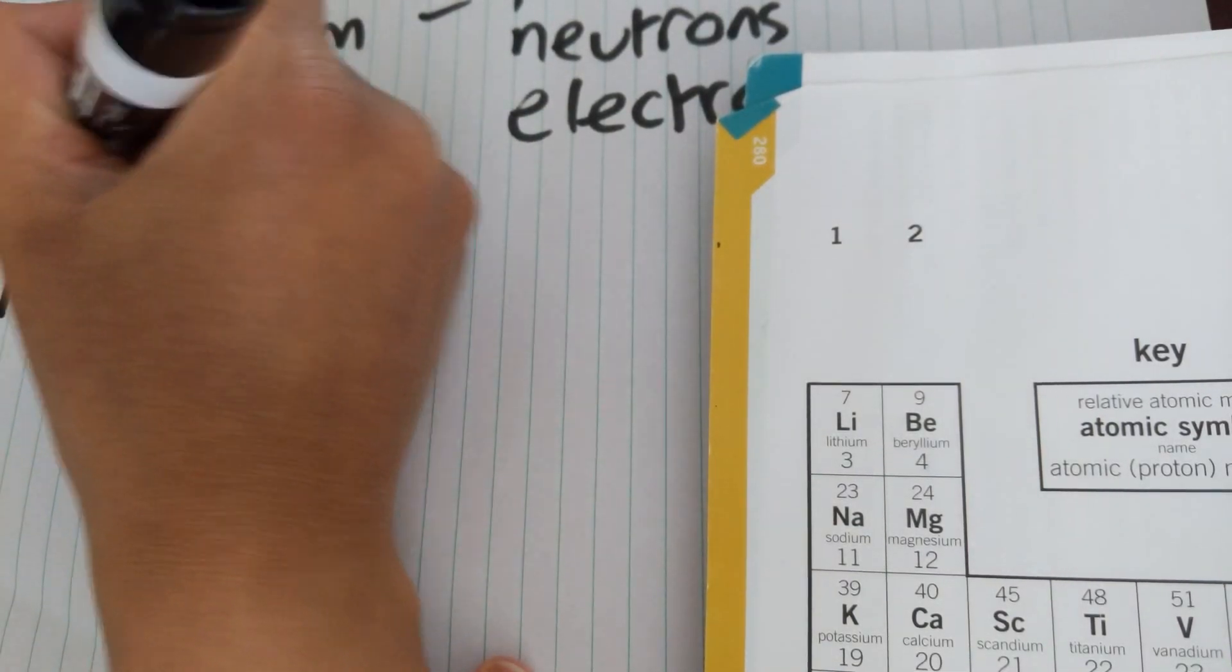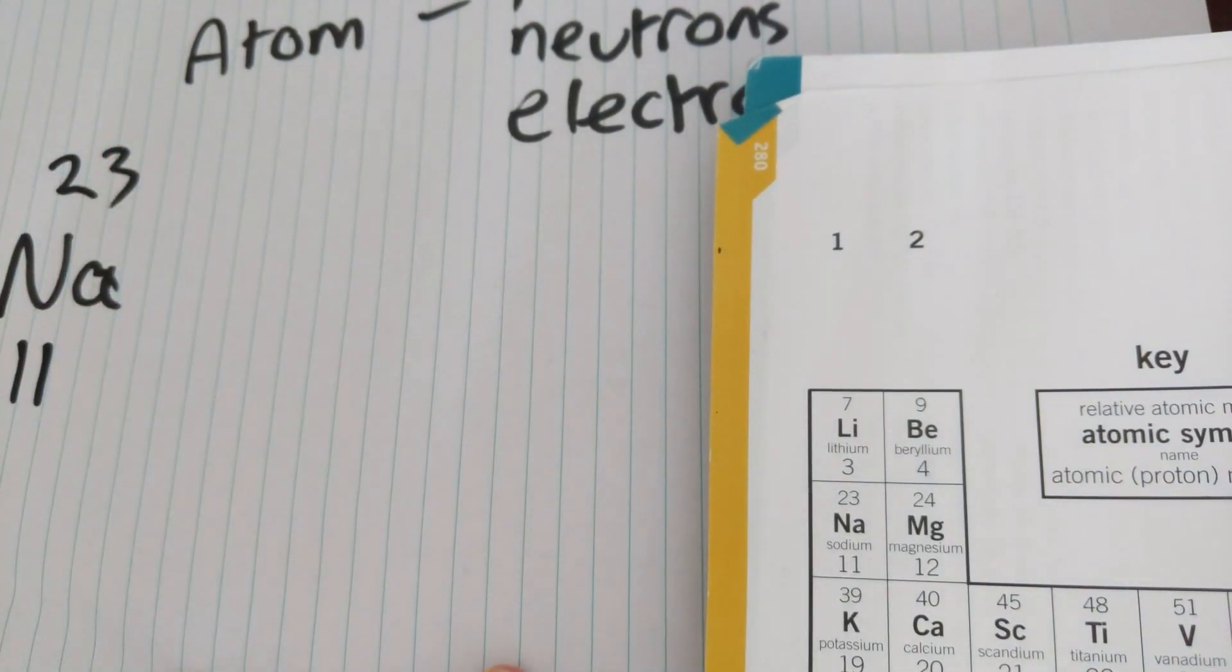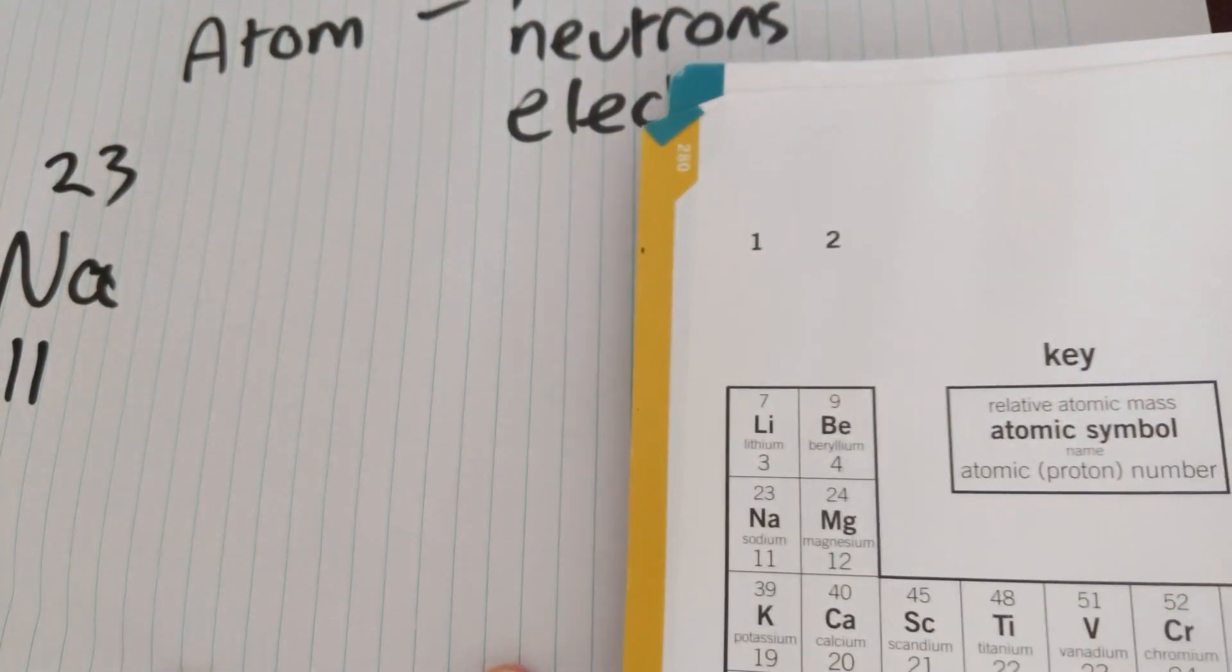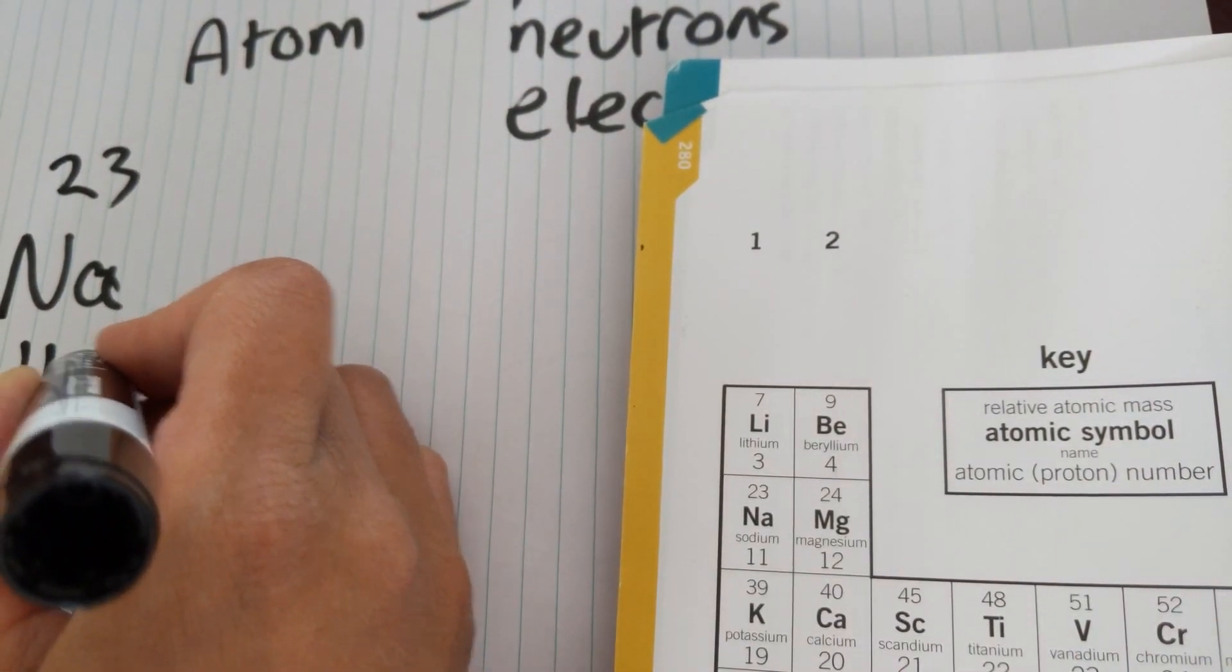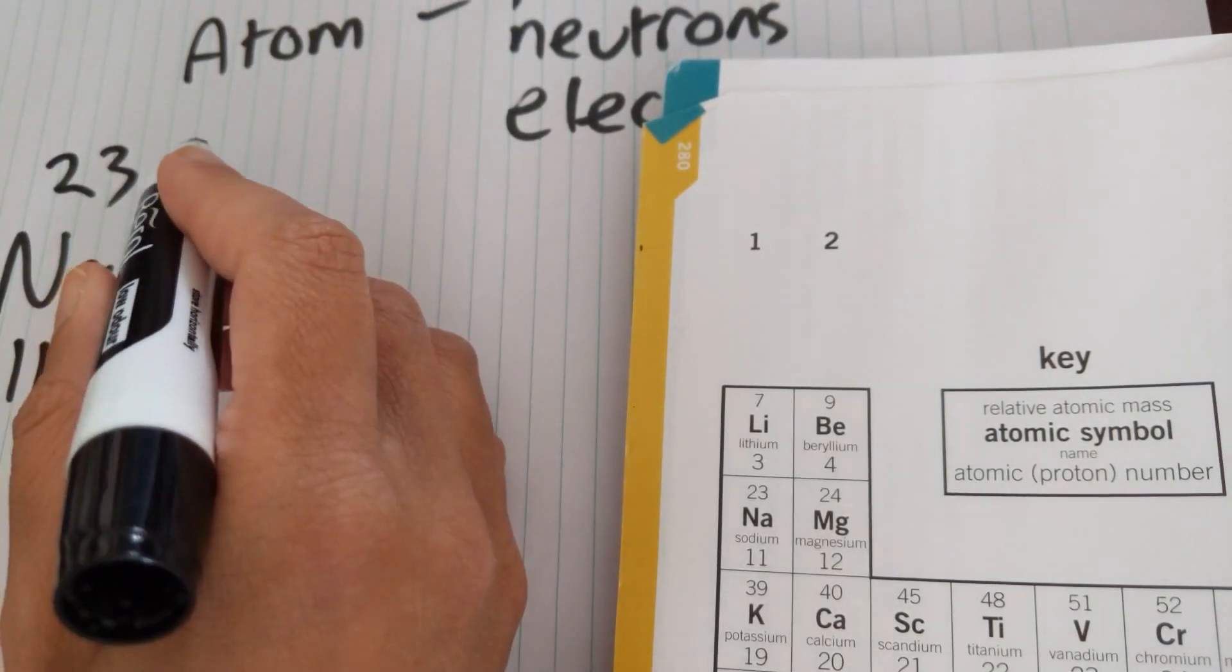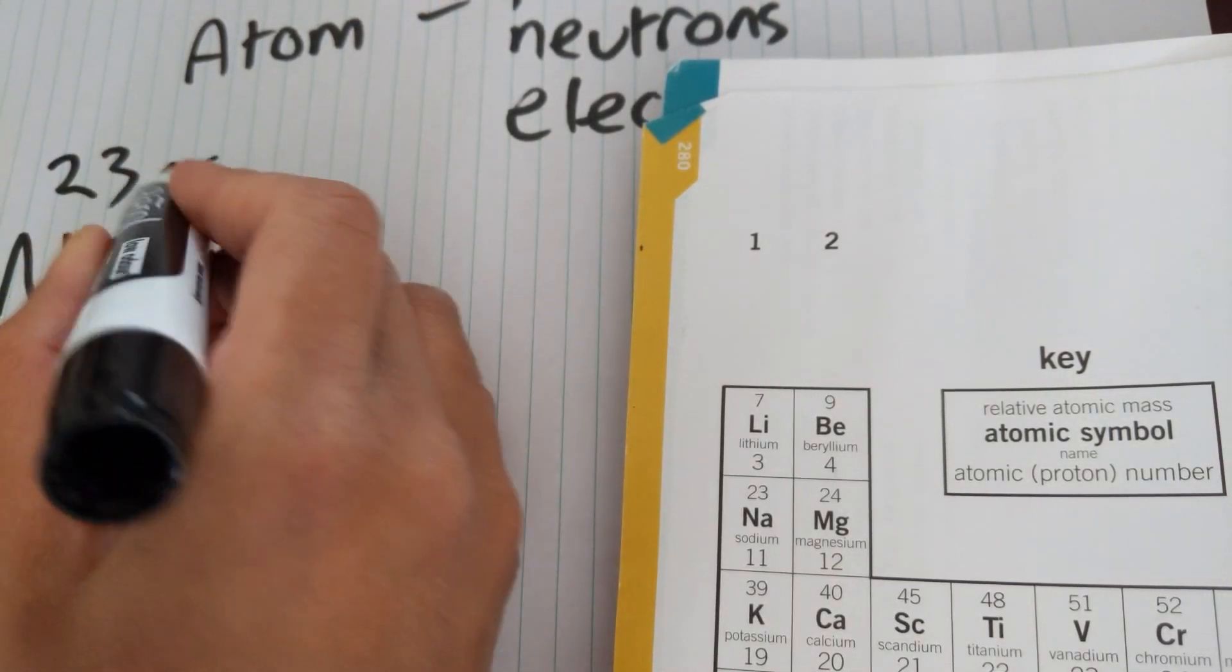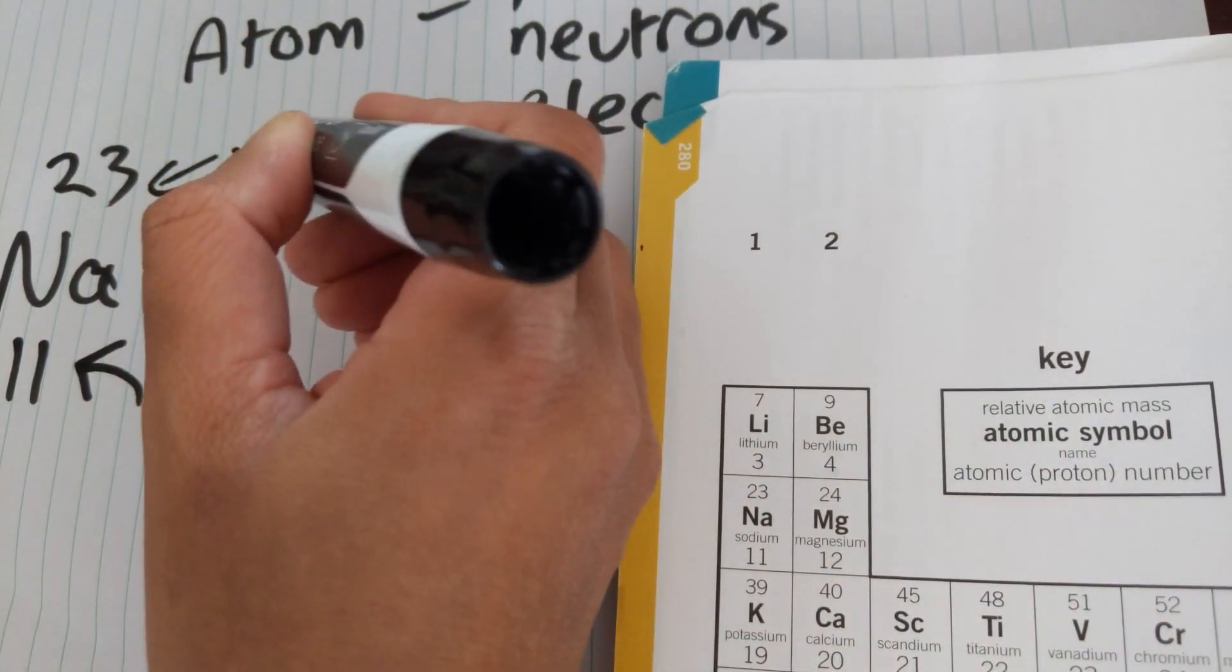And on the periodic table, it's got a big number of 23 at the top and a little number of 11 at the bottom. If we look at the key on our periodic table, the small number at the bottom is the atomic or proton number. So that tells us the number of protons.